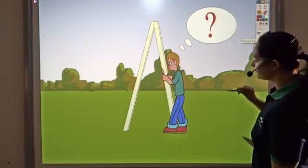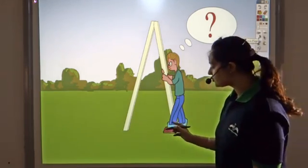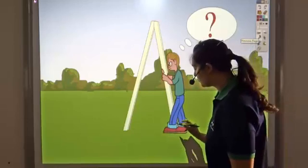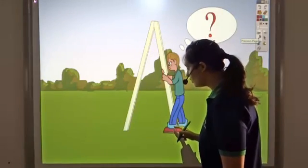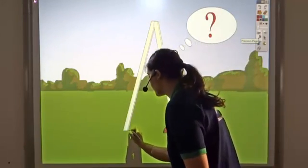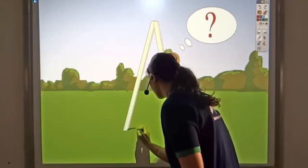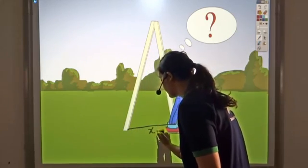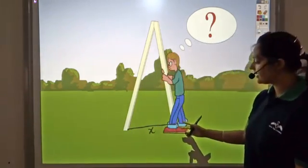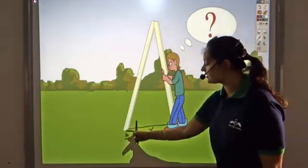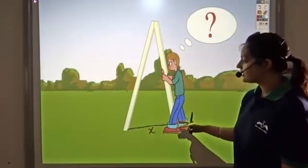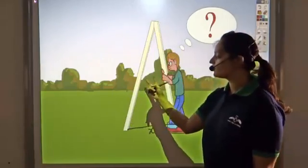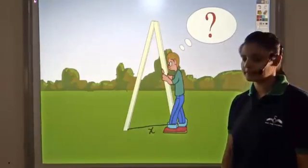So let us see — he wants to find the distance: how far he should put the second hole in the ground to fix this side. So he has to find this distance. Let us say this is x. Now he realises that this distance he has to find is actually completing a triangle which has two legs and x as the third side.